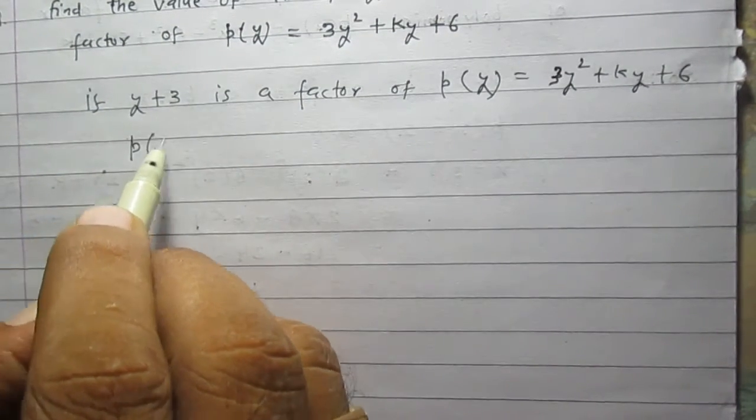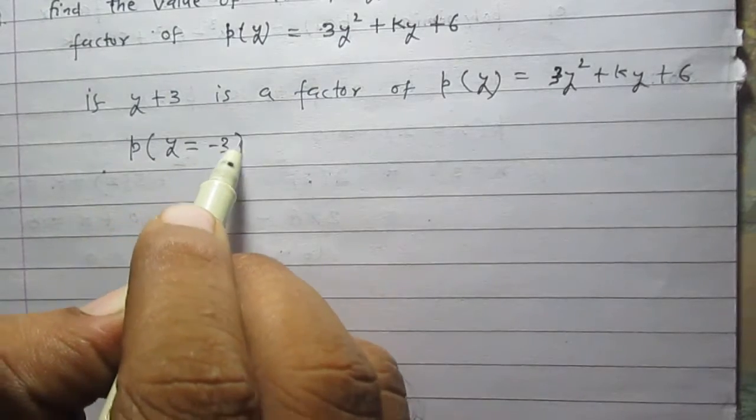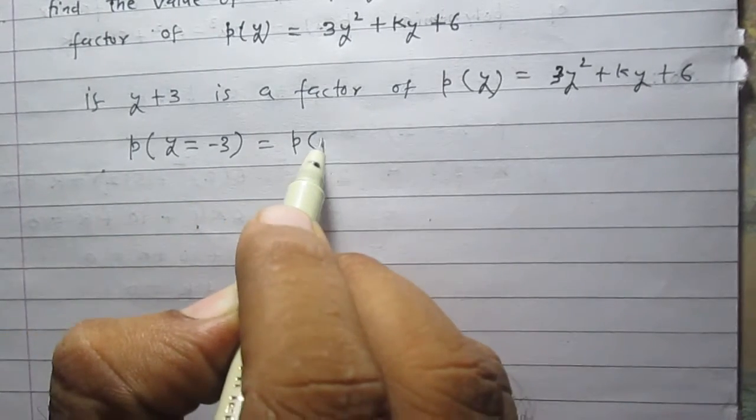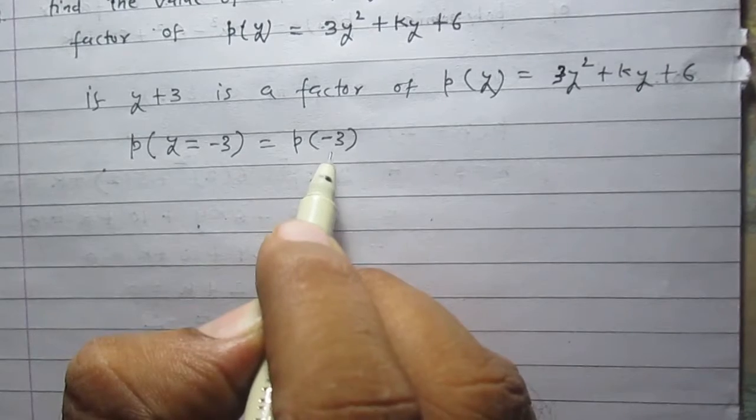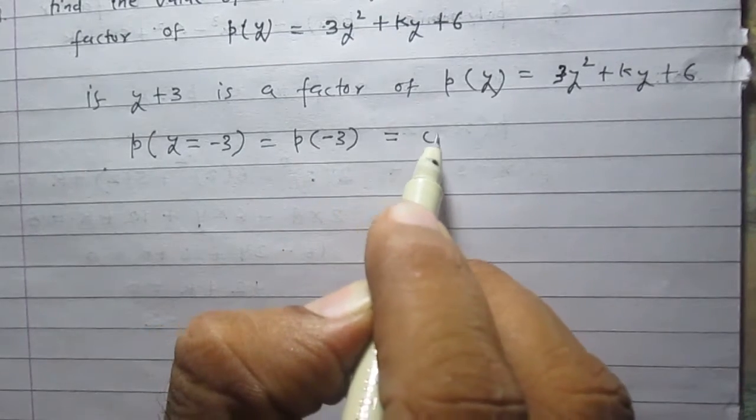p when y is equal to minus 3, or you can say polynomial p of minus 3, must be equal to 0.